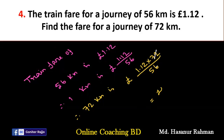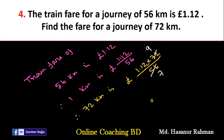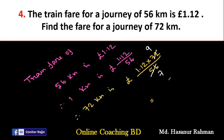Dividing 72 and 56 both by 8 gives 9 and 7. Now multiply 1.12 by 9 then divide by 7, and we get 1.44 pounds. So the train fare for a journey of 72 km is 1.44 pounds.